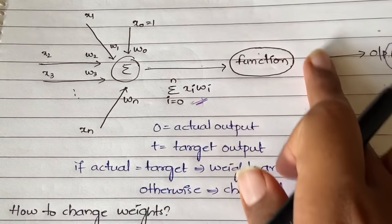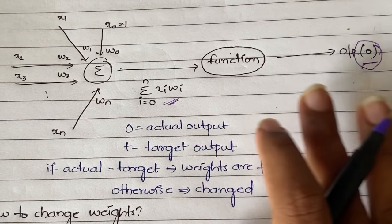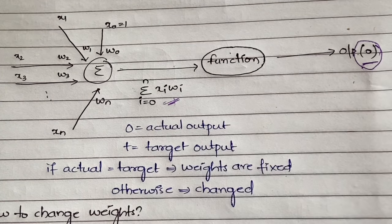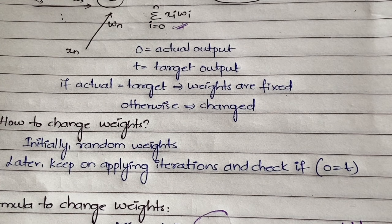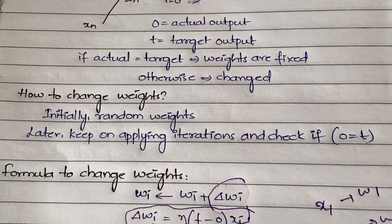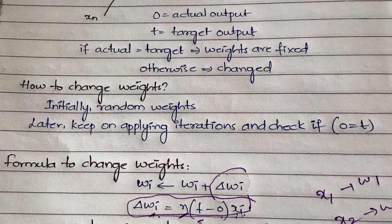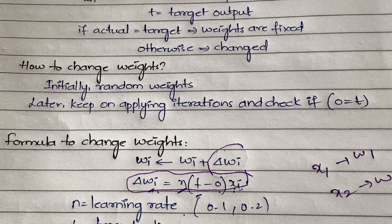You need to update all weights — if you have four weights, update all four. Then run the function again and check whether the actual output equals the target output. If they are equal, you are done. If not, change the weights again. You keep doing iterations until the actual output equals the target output, then finalize those weights to train your perceptron.